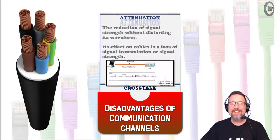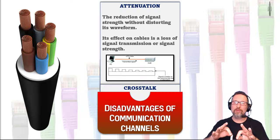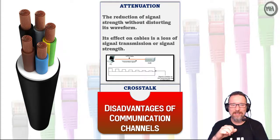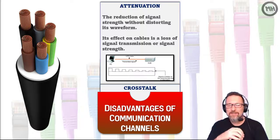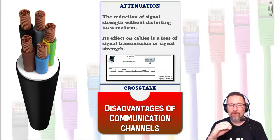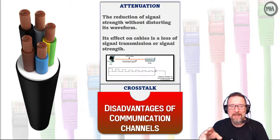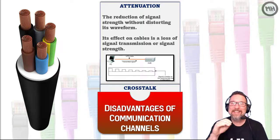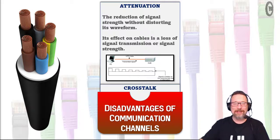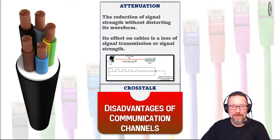Next is attenuation — a great word to know. Attenuation is the reduction of signal strength without distorting its waveform. Its effect on cables is a loss of signal strength or signal transmission quality.